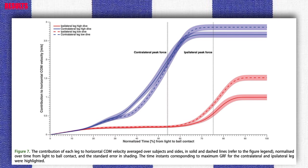Furthermore, maximum contralateral leg contribution to vertical center of mass velocity was significantly larger for high dives than low dives, whereas the maximum contralateral leg contribution to the horizontal center of mass velocity was significantly larger for low dives than for high dives.